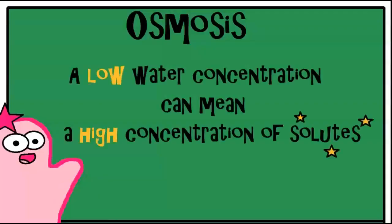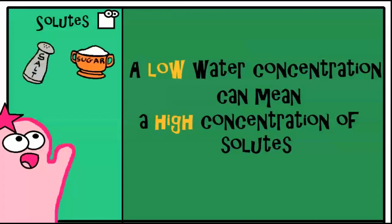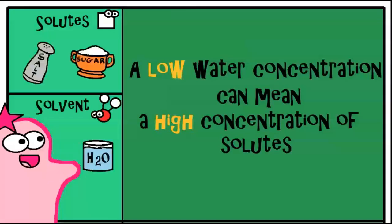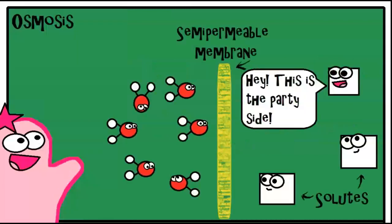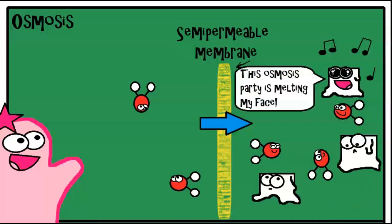But there's another way to think about water movement in osmosis. A low water concentration likely means there are a lot of solutes. Solutes are substances like salt or sugar that can be dissolved within a solvent like water. Water has the tendency to move to areas where there is a high solute concentration, which means there's less water concentration. So if you want to easily figure out where the water will travel, look to the side where there is a greater solute concentration.